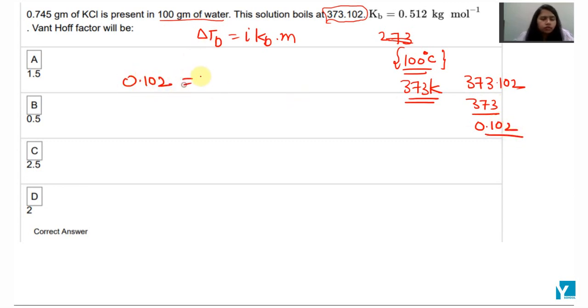So delta Tb is 0.102. To calculate i, Kb will be 0.512.